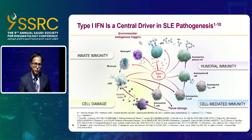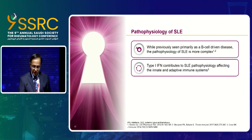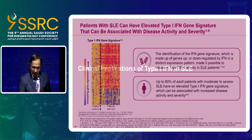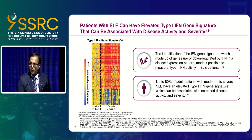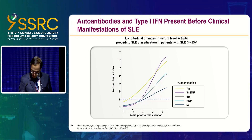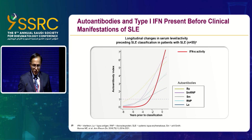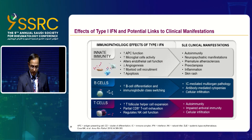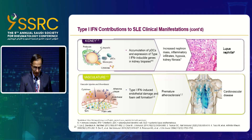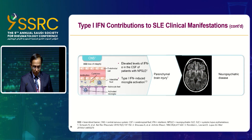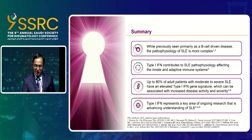The implication is that SLE patients have an elevated interferon gene signature. Autoantibodies and Type 1 interferon are present before clinical manifestations of lupus, and these different manifestations that are present in lupus are based on interferon gene activation.